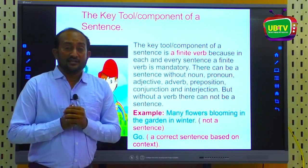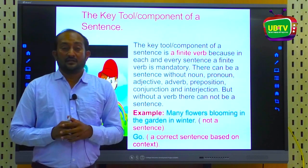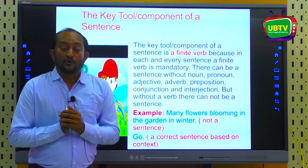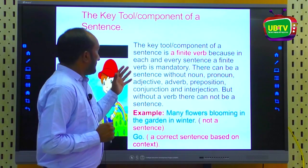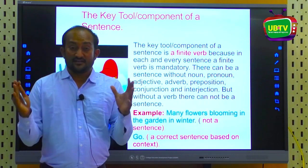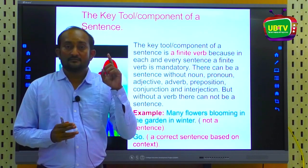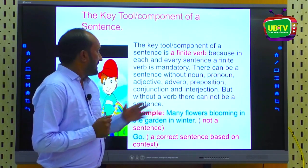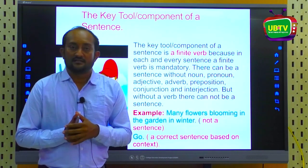The key tool or component of a sentence — this is the fundamental aspect. Among the materials of sentence making, one thing is very basic and that is the finite verb. Because without a finite verb, there cannot be a sentence.